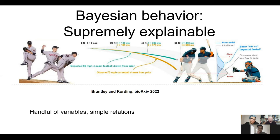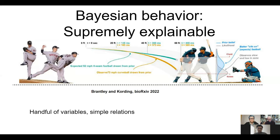In the first part of my career I worked in the supremely explainable part of neuroscience, which is the field of Bayesian behavior. Here's our newest paper in that area: if a pitcher throws the ball, the batter has to estimate where it will land. There is a prior distribution of where the ball should land, combined with a prior distribution from seeing the ball fly. Bayesian models were the quintessential part of artificial intelligence for a long time.